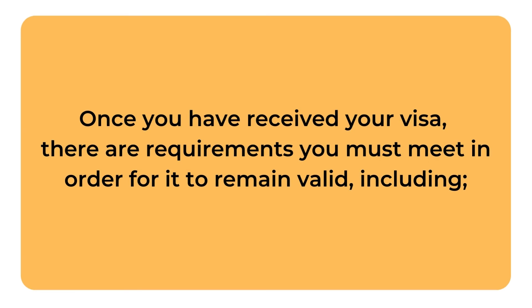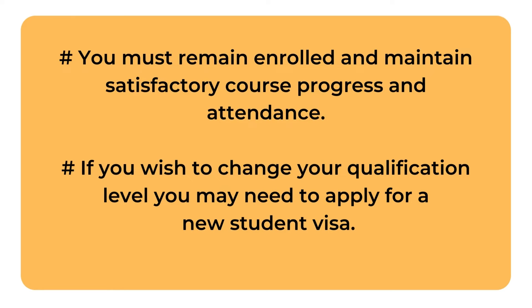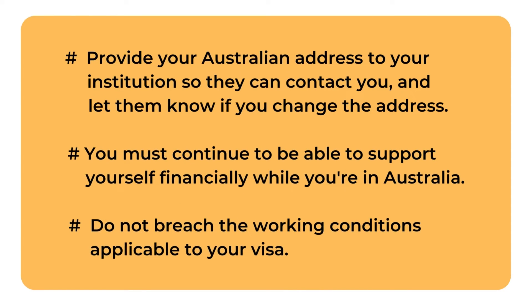Visa compliance: once you have received your visa, there are requirements you must meet in order for it to remain valid, including: you must remain enrolled and maintain satisfactory course progress and attendance. If you wish to change your qualification level, you may need to apply for a new student visa. Provide your Australian address to your institution so they can contact you, and let them know if you change address. You must continue to be able to support yourself financially while you're in Australia. Do not breach the working conditions applicable to your visa.